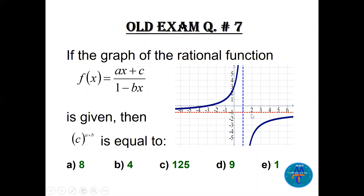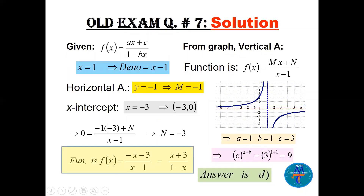Question 7: a graph is given and the function is written in the form (ax + c) / (1 - bx). Find c^(a+b). From the graph, the vertical asymptote is at x = 1, so the denominator includes (x - 1). We write the function as (mx + n) / (x - 1). The horizontal asymptote is y = -1, so m/1 = -1, meaning m = -1.